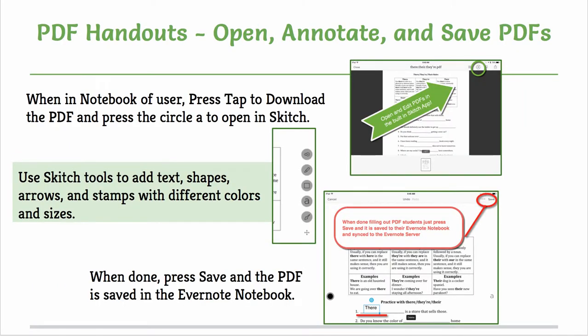After you have it in the proper notebook, you can press and tap to download the PDF. When it opens, you will see a circle with an A in the top. That is Skitch, so you press on that. Skitch will open the PDF and you will see tools on the right hand side and colors on the left hand side.